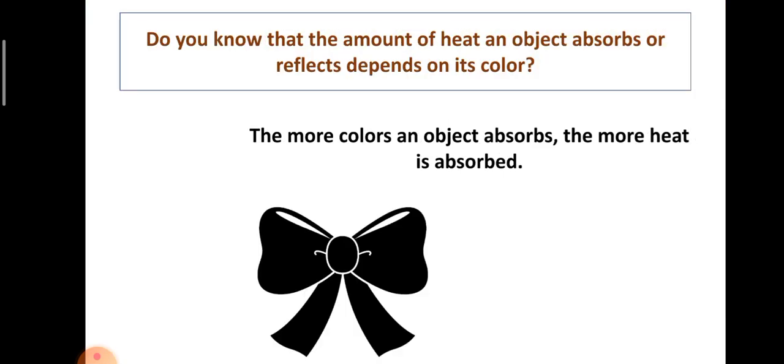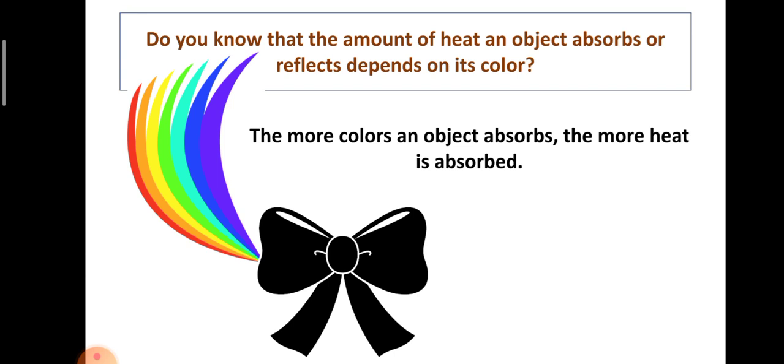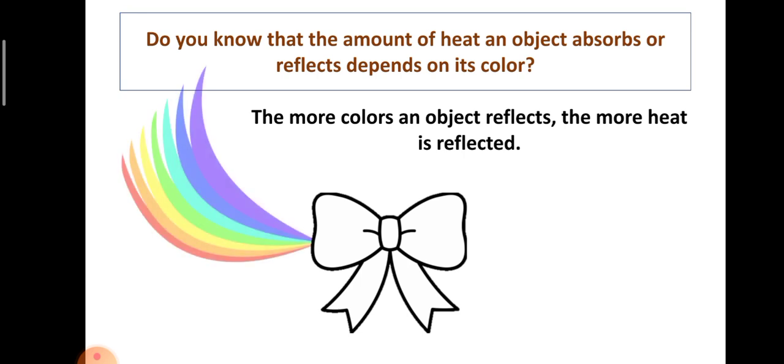Do you know that the amount of heat an object absorbs or reflects depends on its color? The more colors an object absorbs, the more heat is absorbed. The more colors an object reflects, the more heat is reflected. And with this, we can say that black or objects with dark colors are warmer than white or objects with lighter colors.